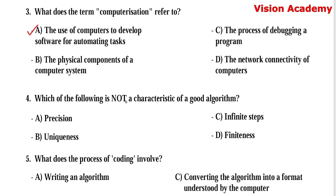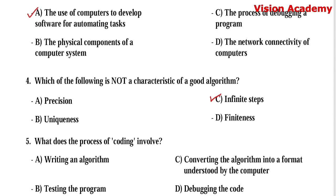Question number 4: Which of the following is not a characteristic of a good algorithm? Option A, precision. Option B, uniqueness. Option C, infinite steps. Option D, finiteness. Here, option C, infinite steps, is the right answer.